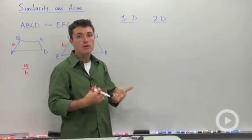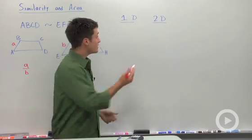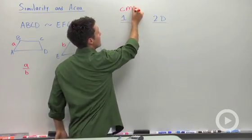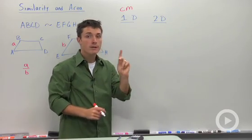Something that is one-dimensional is just a length. So think of a distance. Distances, we would say, have units of centimeters, inches, miles, but it's a one-dimensional attribute.